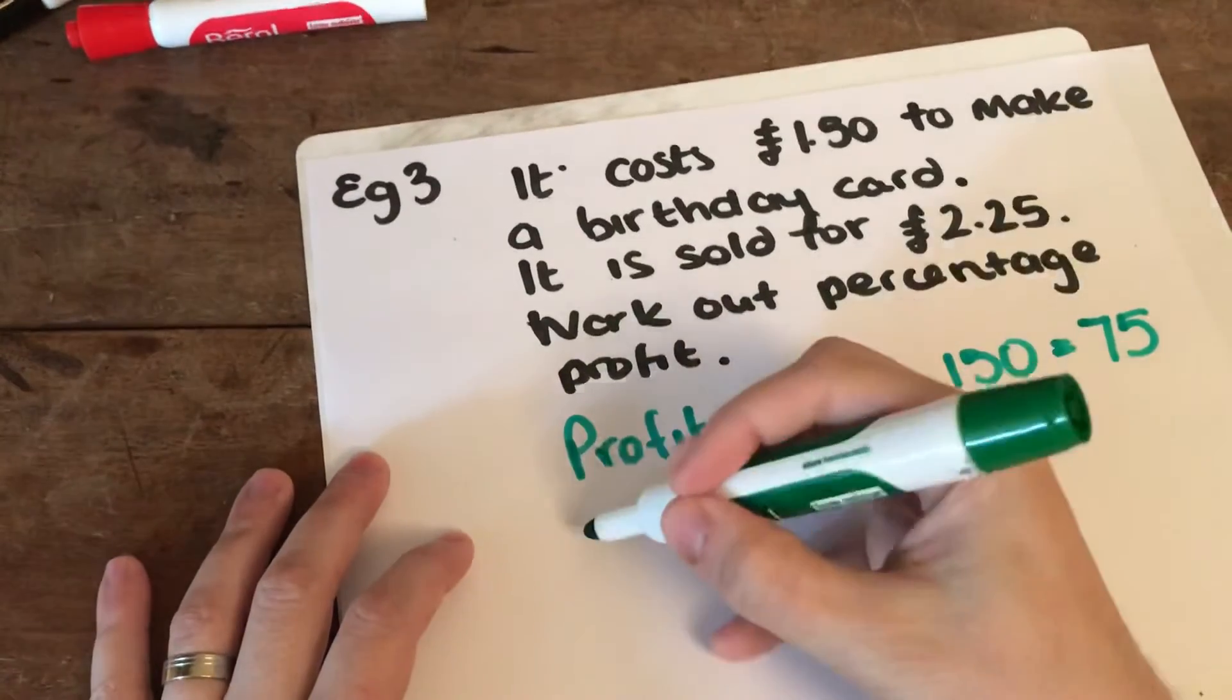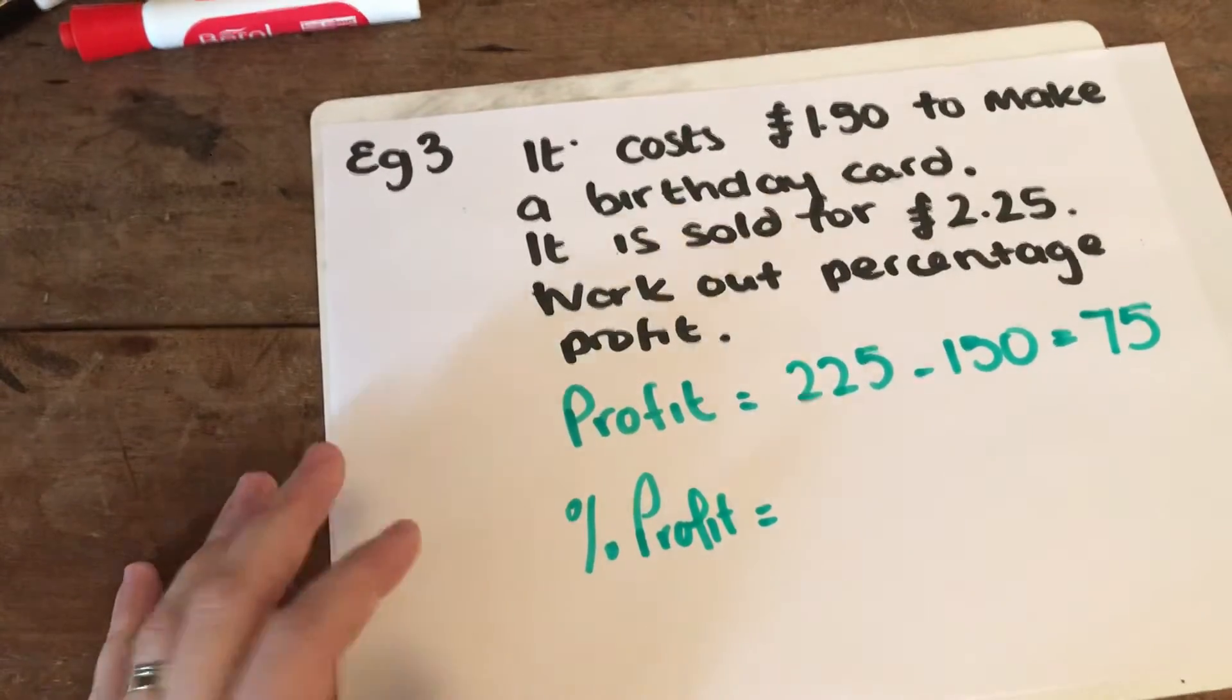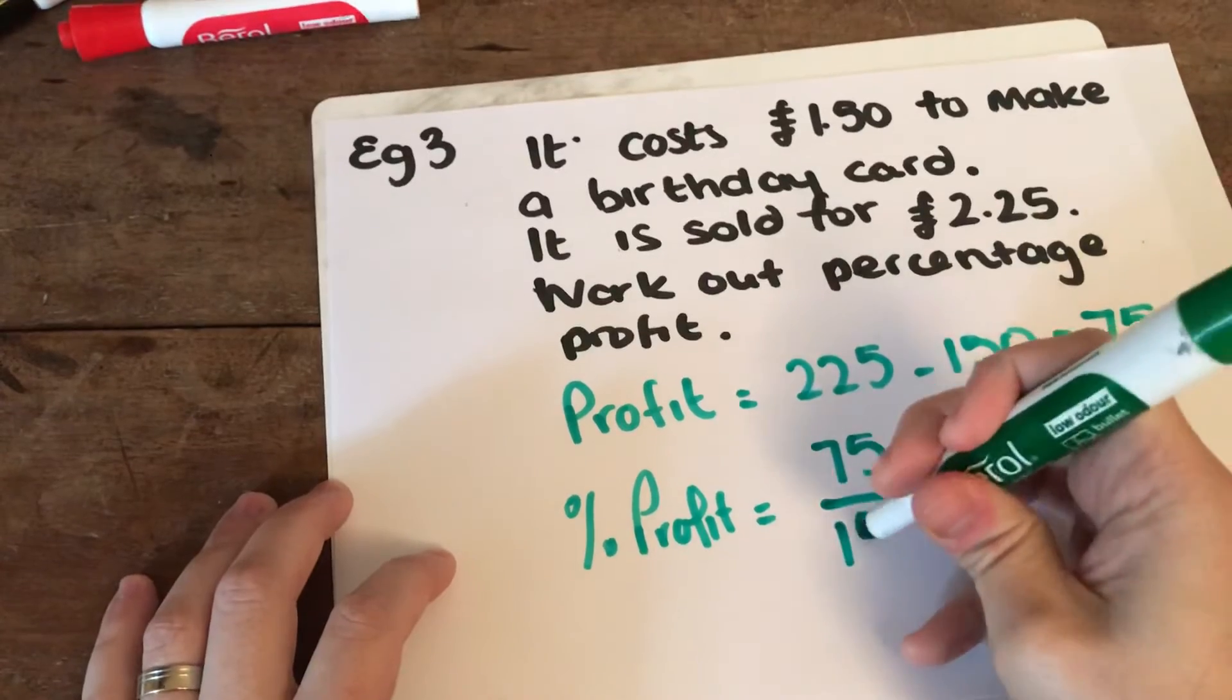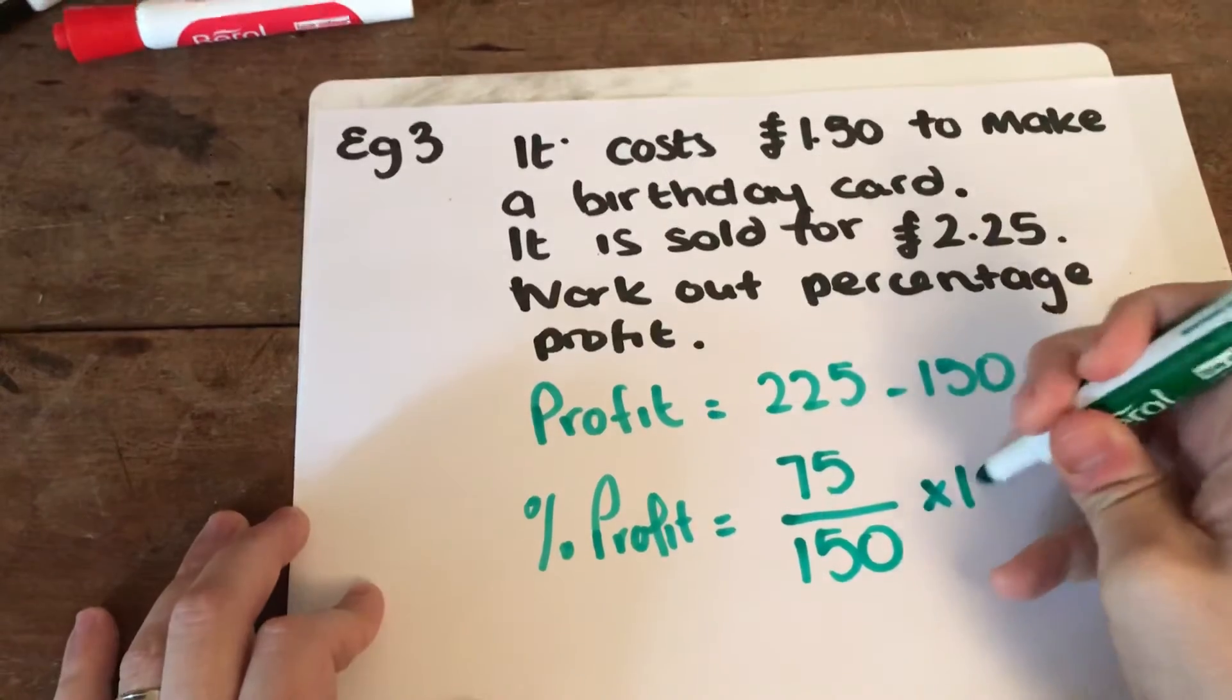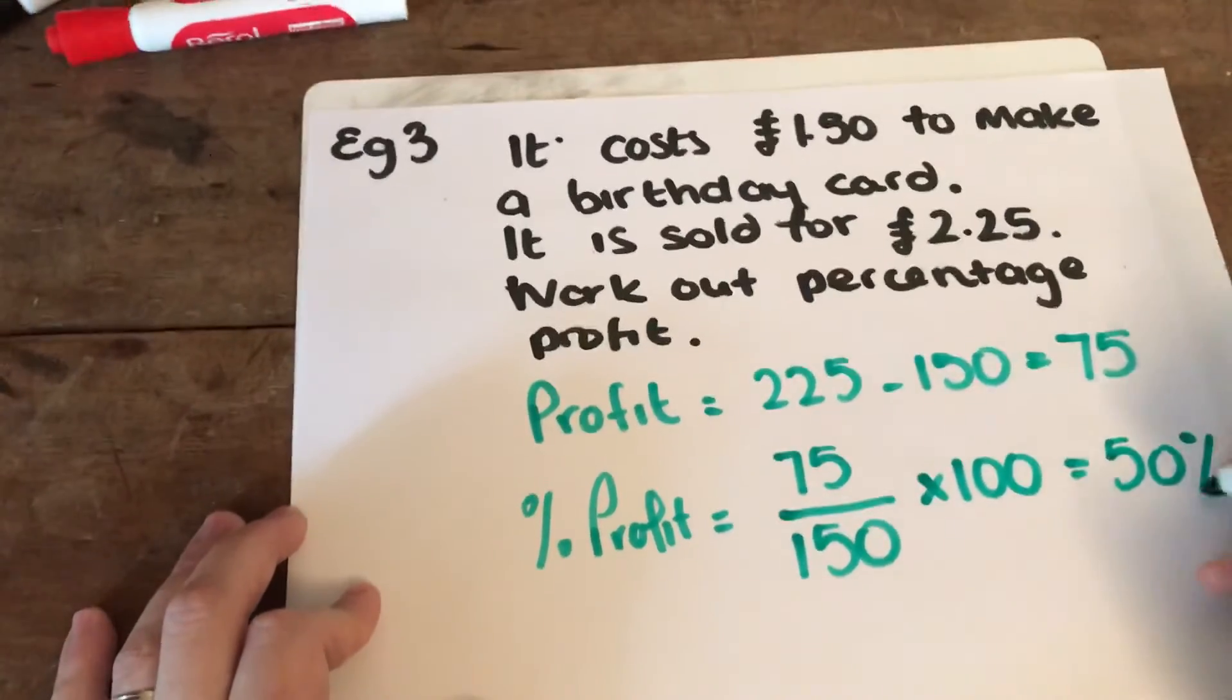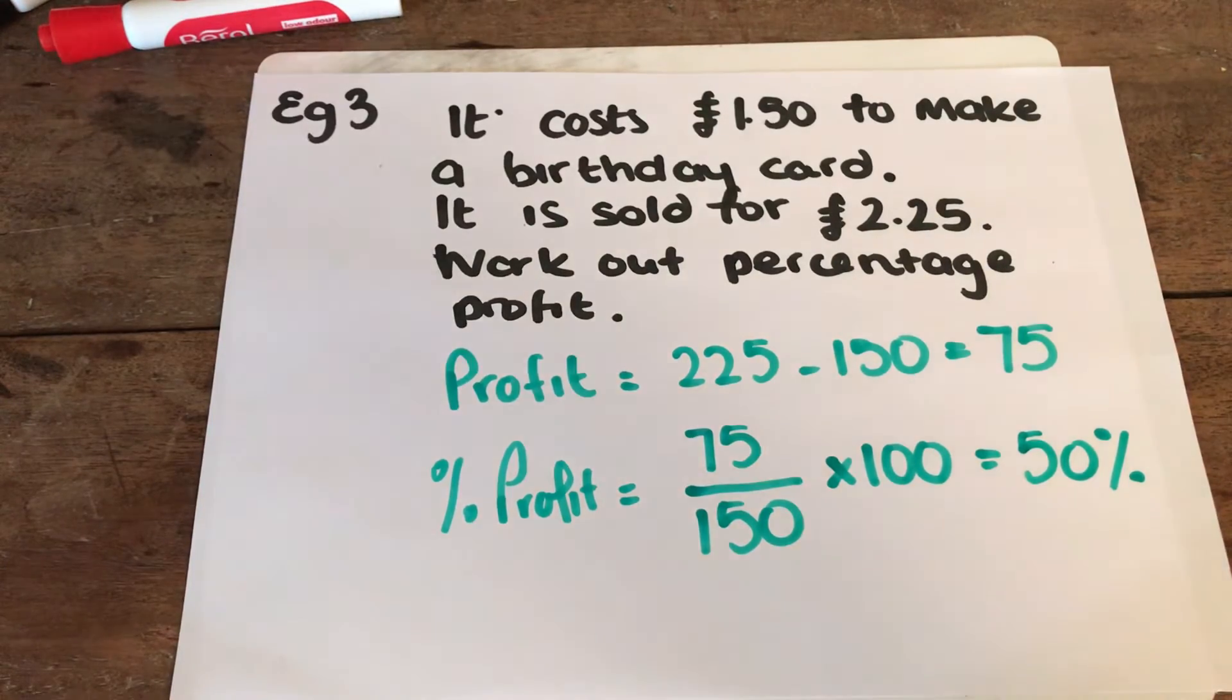What I then do to work out percentage profit is I write this as a fraction out of how many they originally cost. So if you imagine 75 pence is your profit, it originally cost £1.50 which is 150 pence, and then times that by 100. You can figure out that this is 50% here, so your percentage profit is 50%. Use this to help you complete the remaining of the questions on the knowledge organiser and then the MathsWatch homework.